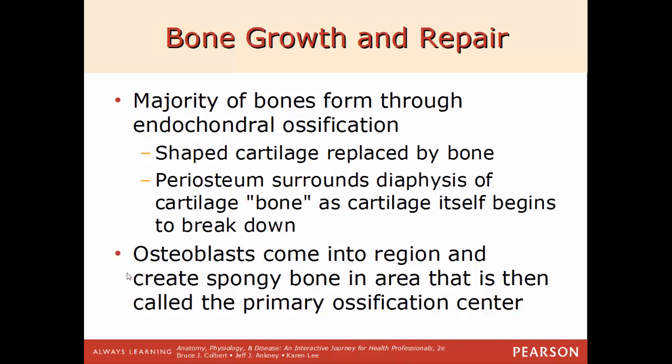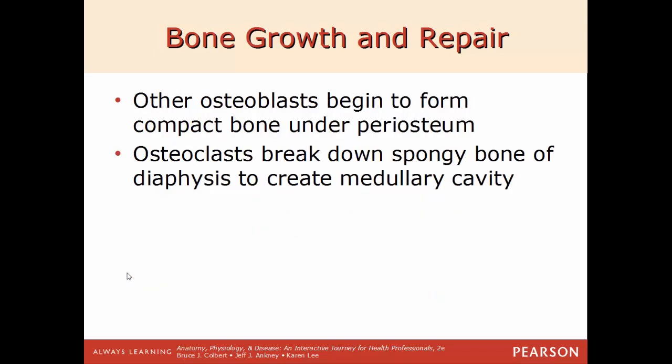The majority of bones form through endochondral ossification, where shaped cartilage is being replaced by bone. The periosteum covers the limbs as the fetus develops — all starting as hyaline cartilage — and that cartilage begins to be replaced by bone as it gets broken down. Osteoblasts come into the region and create spongy bone in an area called the primary ossification center. Other osteoblasts form compact bone under the periosteum in the shaft, while osteoclasts break down spongy bone of the diaphysis to create the medullary cavity.